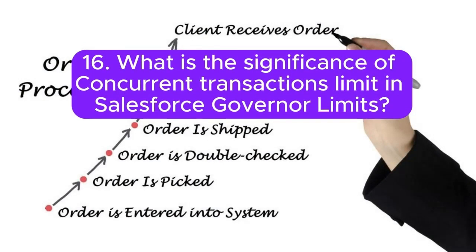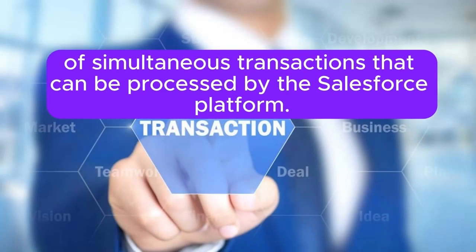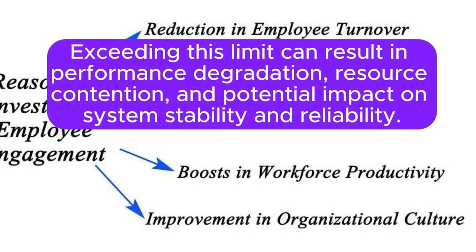Question 16: What is the significance of concurrent transactions limit in Salesforce governor limits? Answer: The concurrent transactions limit restricts the number of simultaneous transactions that can be processed by the Salesforce platform. Exceeding this limit can result in performance degradation, resource contention, and potential impact on system stability and reliability.